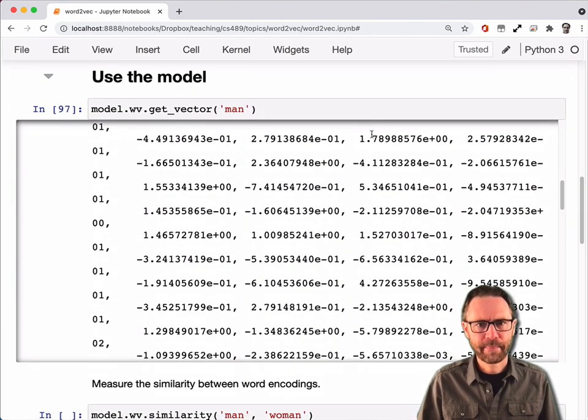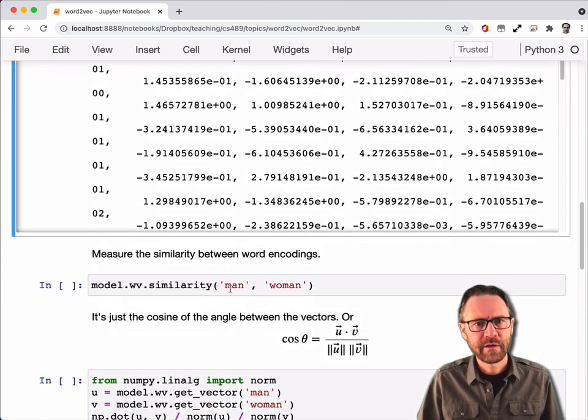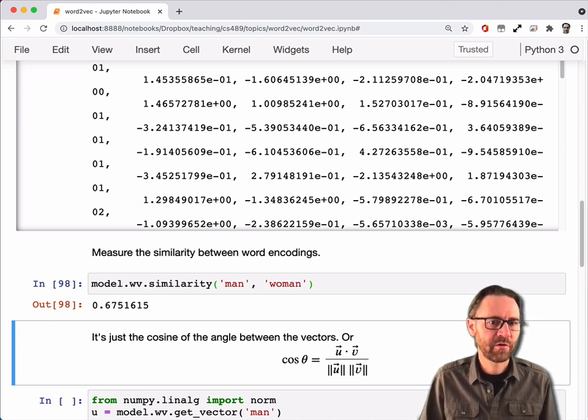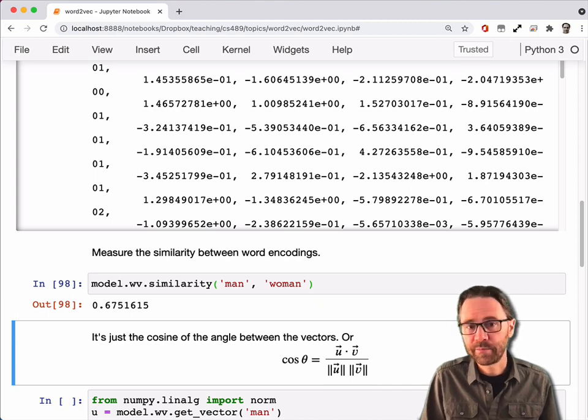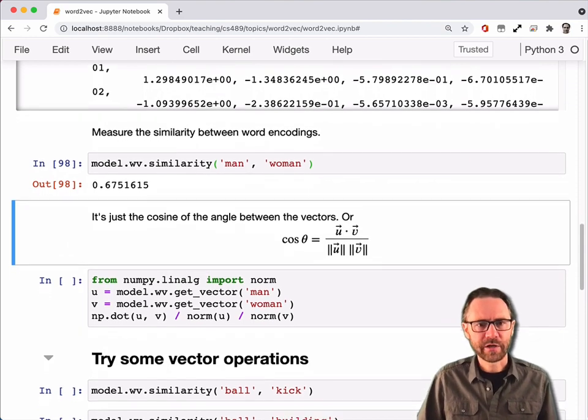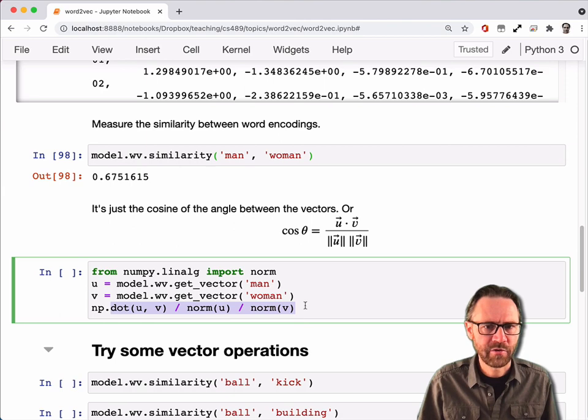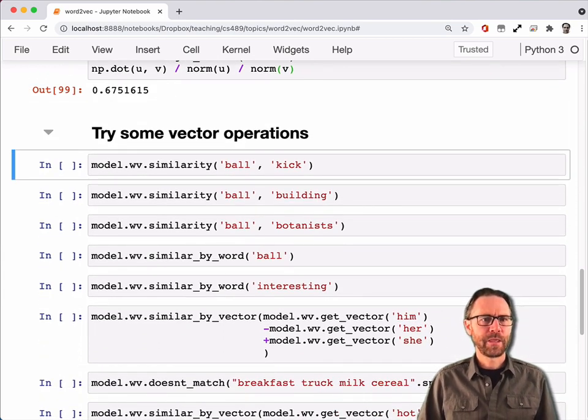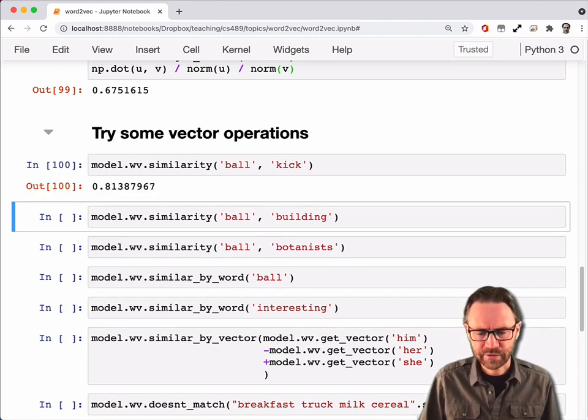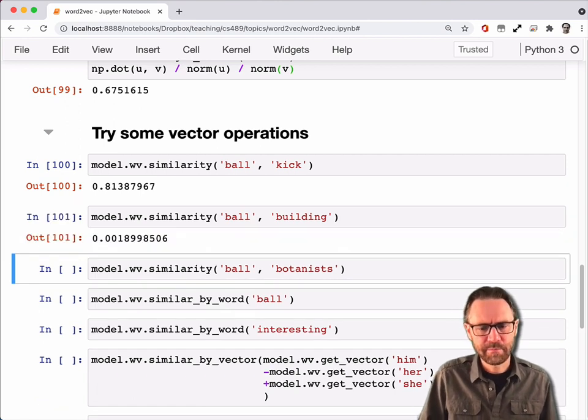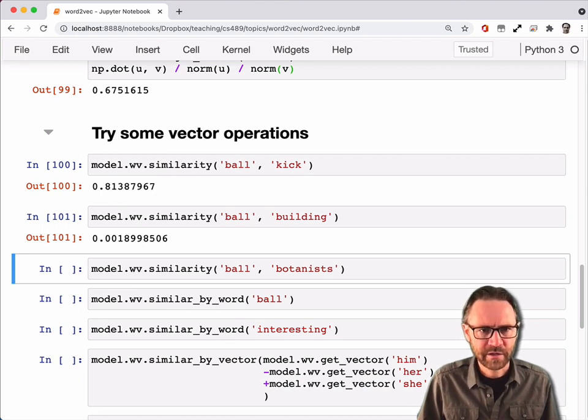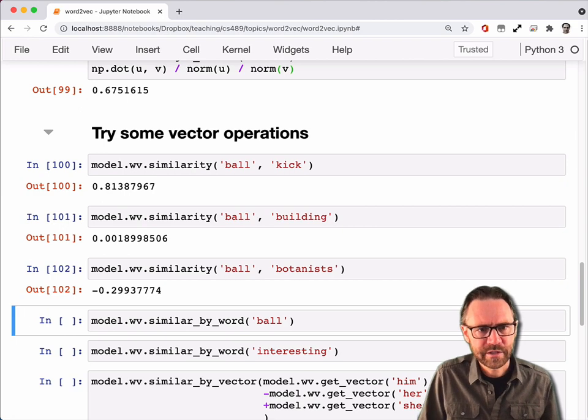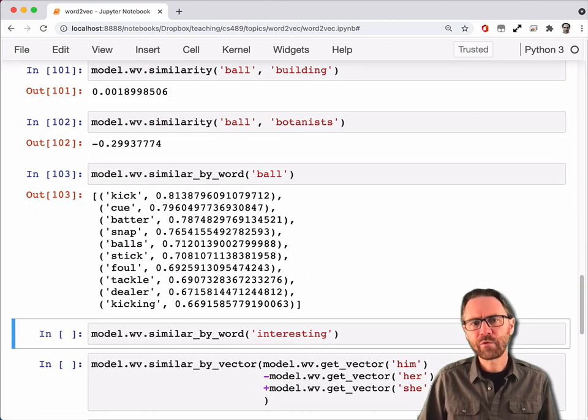Let's try using the model. You can actually get the vector. This is the vector for man. It's not displayed very nicely here. I can make the window a bit wider. No, it's not working. Let me do this instead. So it's a 300 vector. Because this model, this size here would have given the size of the embedding space. So I chose 300. And so this is a 300 vector. I won't go back down. I won't make the font small again. And you can measure the similarity between two words. Man and woman have a cosine, the cosine of the angle between those two vectors is 0.675. And you can actually compute it. You can take the vectors themselves, and take the dot product and divide by the norms of the two vectors. And you get the same number.